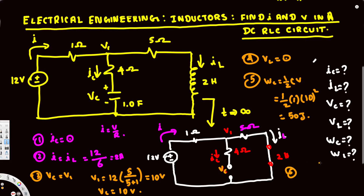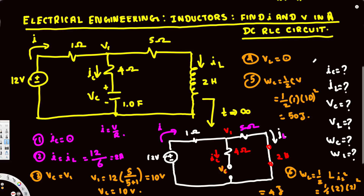Last one: what is the energy through the inductor? We use the equation WL = ½ × L × IL². The inductance is 2 henrys and the current is 2 amperes, so WL = ½ × 2 × 2² = ½ × 2 × 4 = 8/2 = 4 joules. So 4 joules is the energy stored in the inductor.